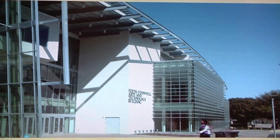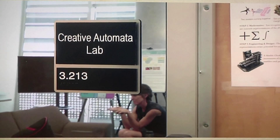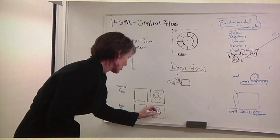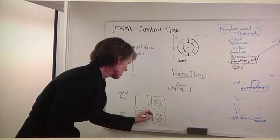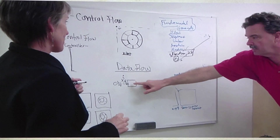My name is Paul Fishwick. I'm Professor of Computer Science and also a Distinguished Professor in Arts and Technology. I'd like to say something about the Creative Automata Lab, which I direct. The purpose of the lab is to make abstract concepts in computing concrete. The first strategy is to find abstract concepts in the real world — in computing and mathematics. That's observation. The other part is creation or creativity.